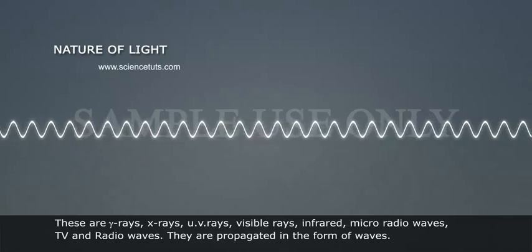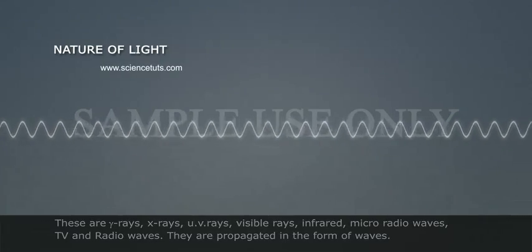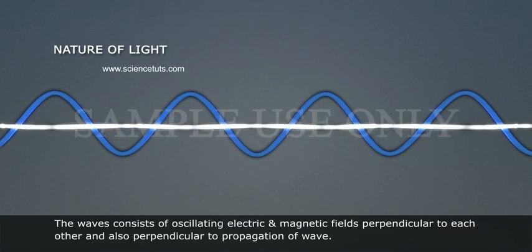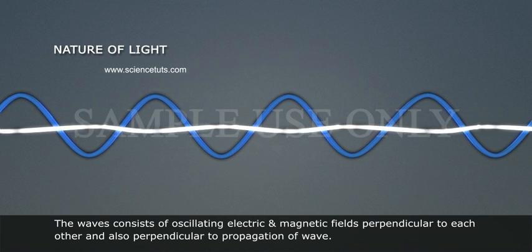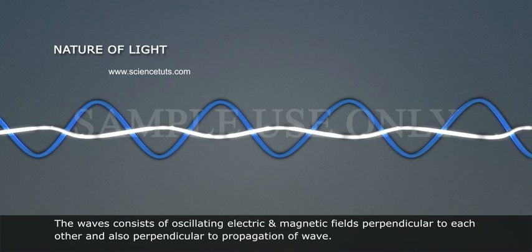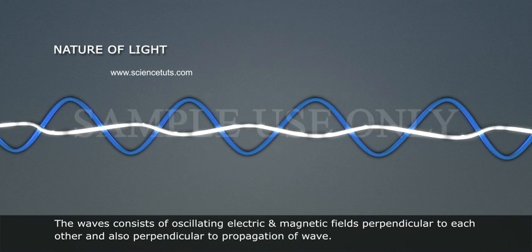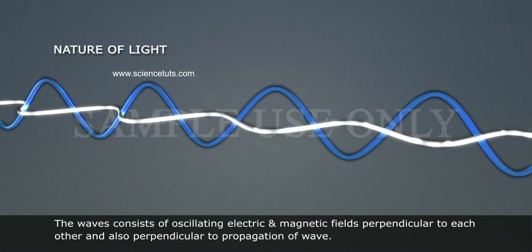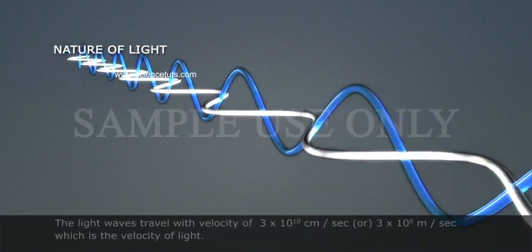They are propagated in the form of waves. The waves consist of oscillating electric and magnetic fields perpendicular to each other and also perpendicular to the propagation of the wave.